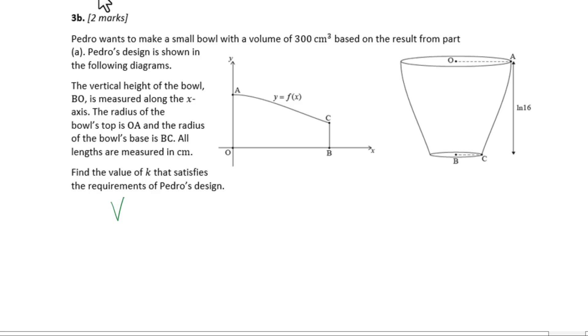Since volume equals 300, we have 15 over 34 k squared pi equals 300. Then we can solve for k. Let's use the equation solver: 15 over 34 k squared pi minus 300 equals 0.